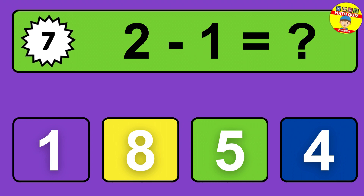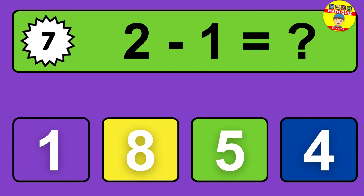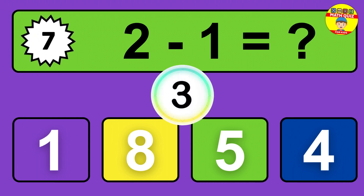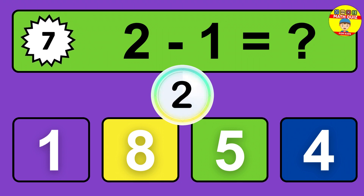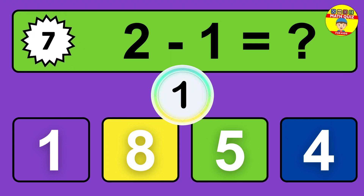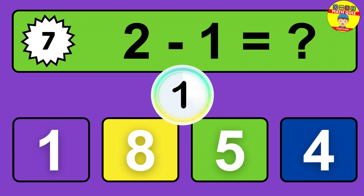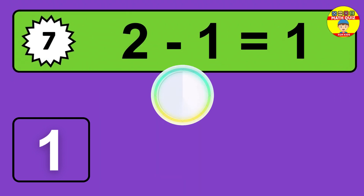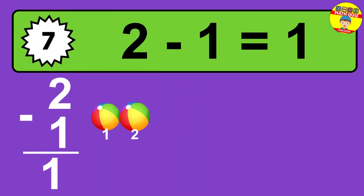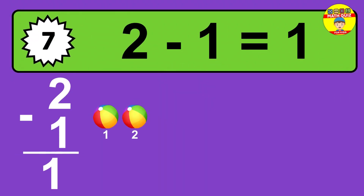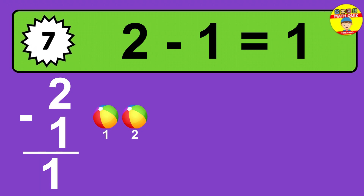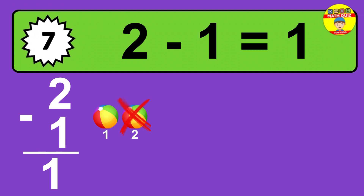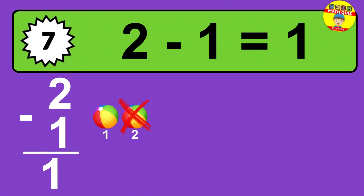Question seven: two minus one equals what? The answer is two minus one is one. Let's count it: one.